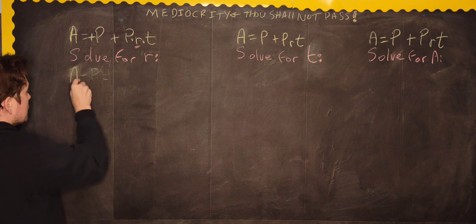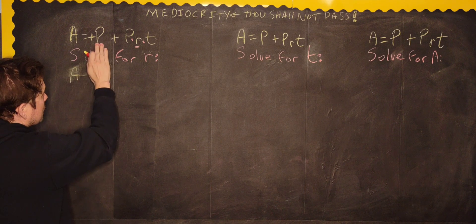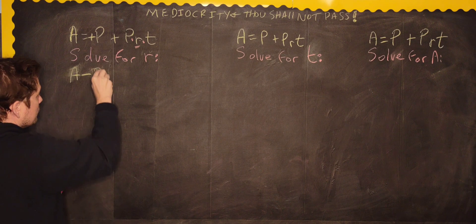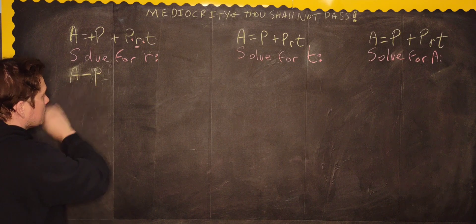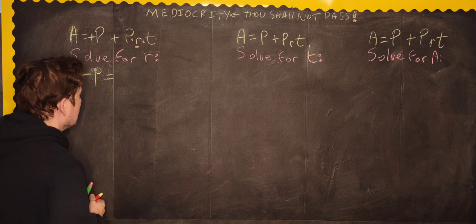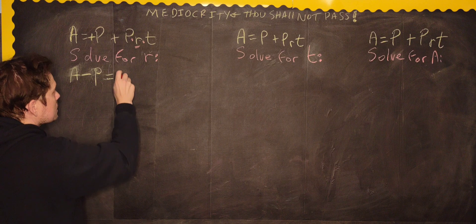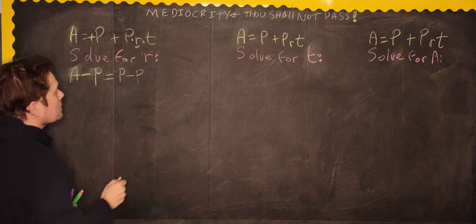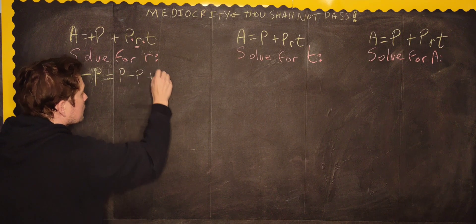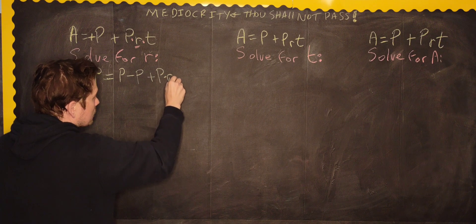So I'm going to say A, and then because this is positive, it comes over here as negative, like this. So it's A minus P is equal to... If you like, you could be very formal and you could say P minus P on this side plus the remaining P multiplying the R multiplying the T.